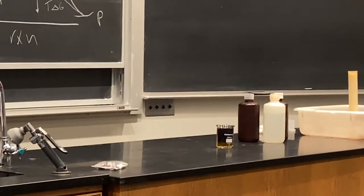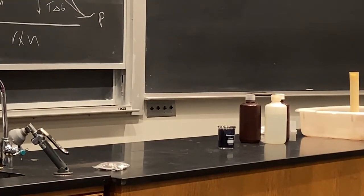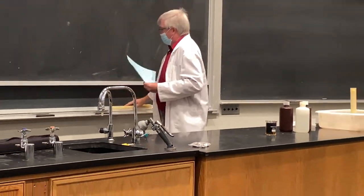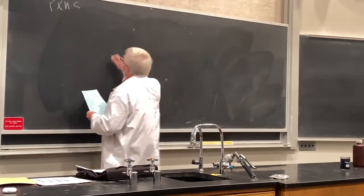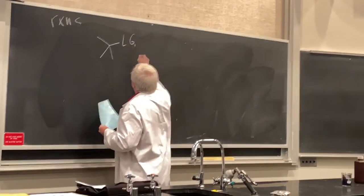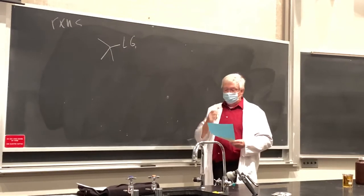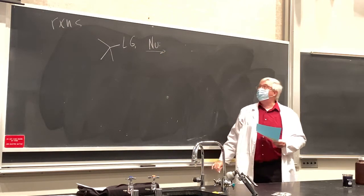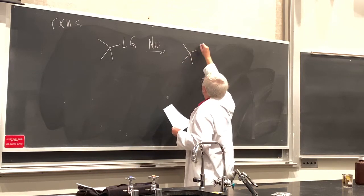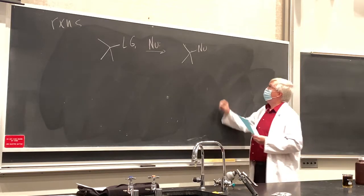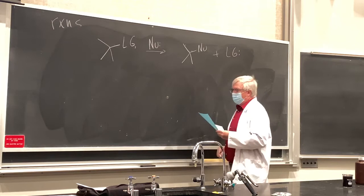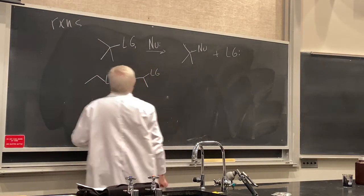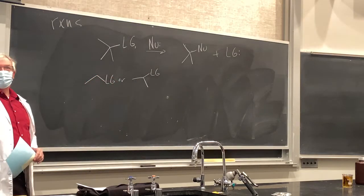Let's give a heads up on reactions coming up in chapters seven and eight before exam two. Here's what we're going to call a leaving group — this group's going to depart. We're going to do a substitution reaction with a nucleophile, which has to have at least a pair of electrons. A lot of times it's charged, sometimes it's neutral. The nucleophile ends up on the organic framework, and the leaving group has departed. I have a tert-butyl leaving group here — remember those fragments.